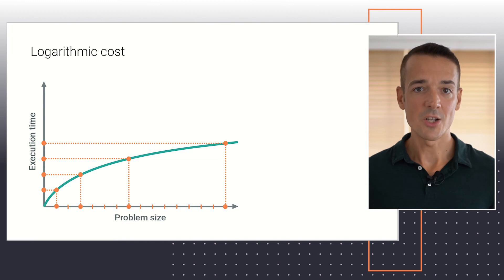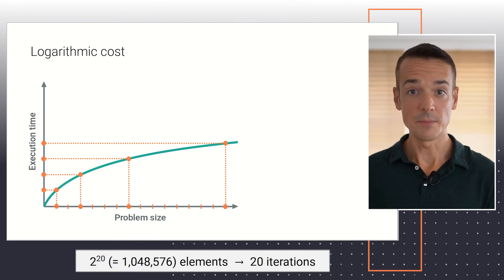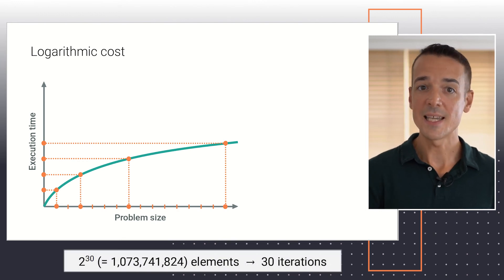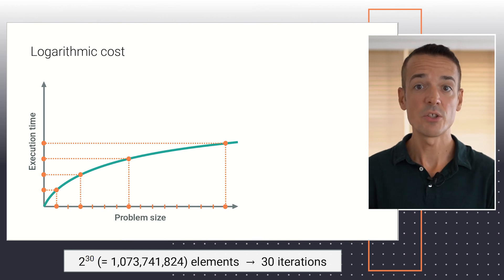Although logarithmic cost algorithms are clearly less efficient than constant cost algorithms, they're still considered very efficient. Think of it this way. Running a container operation on 2 to the 20 elements, or approximately 1 million, can be done by just running 20 iterations of the loop that implements that operation. Similarly, running only 10 more iterations would solve the same problem on a container with 2 to the 30 elements, where 2 to the 30 is approximately equal to 1 billion.